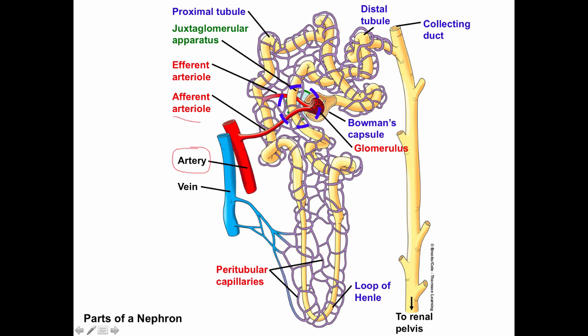The glomerular capillaries are specially designed to allow movement of fluid while retaining all cells and plasma proteins. The plasma that moves into Bowman's capsule is free of cells and plasma proteins but is otherwise identical in composition to plasma. The rest of the blood that doesn't get filtered moves from the glomerulus onto the efferent arteriole, and the efferent arteriole passes blood onto a network of capillaries called the peritubular capillaries.